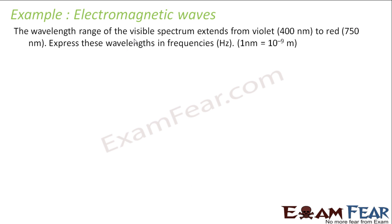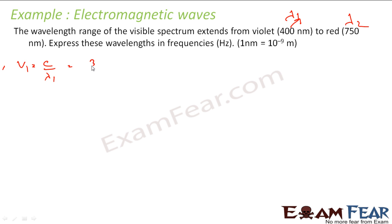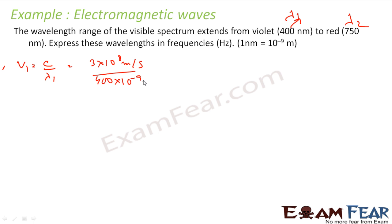The wavelength of the visible spectrum extends from 400 nm to 750 nm. Express these wavelengths as frequencies. Let λ₁ = 400 nm and λ₂ = 750 nm. Finding ν₁ = c/λ₁ = 3 × 10⁸ / (400 × 10⁻⁹) = 7.5 × 10¹⁴ Hz.